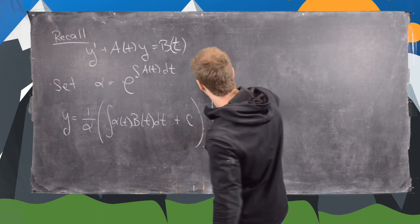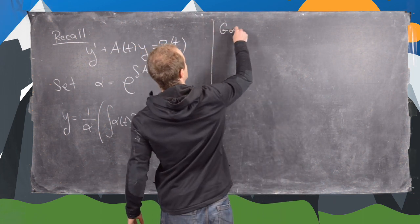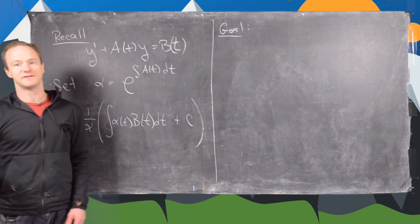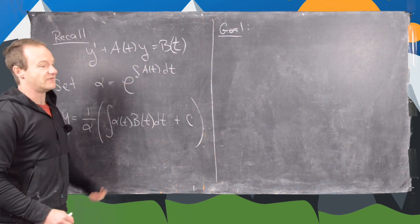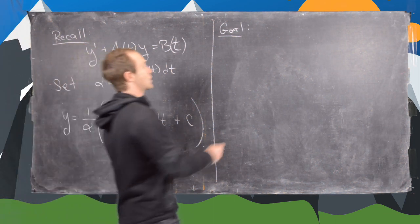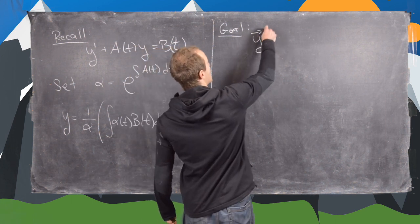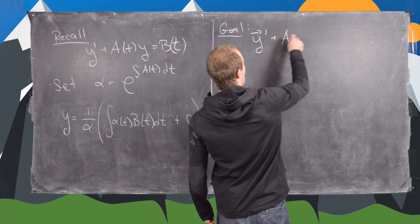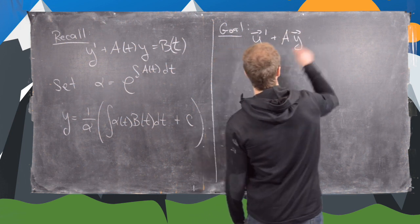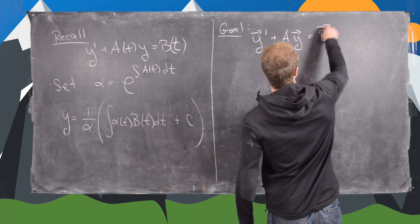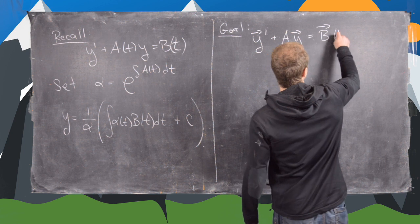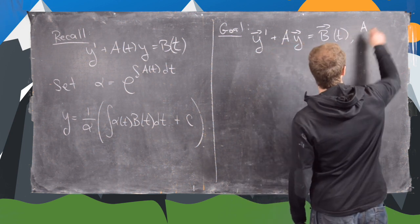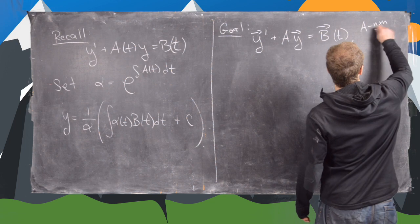Our goal is to make some sort of generalization that has to do with a vector differential equation. So let's say we have y vector prime plus A times y vector equals vector b of t, where A is some sort of n by n matrix.